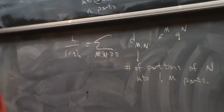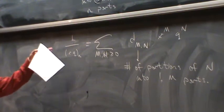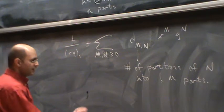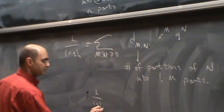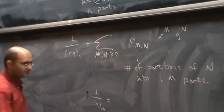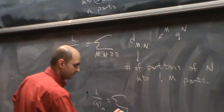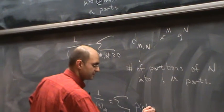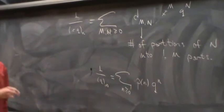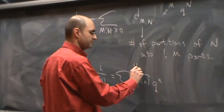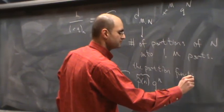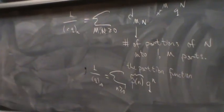We can do even fancier things, but our object was just to define and show some usage of these q factorials. And it's good to remember that 1 over q sub infinity is going to give us the partition function. n greater than 0, q to n, and that's the partition function.